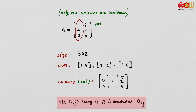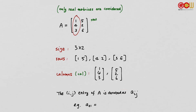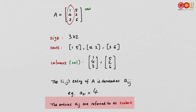We will use the notation a_ij to denote the (i,j) entry of A. For example, a_21 would be this element here, so a_21 is equal to 4. We will call these entries scalars. Scalars are simply real numbers in this book.